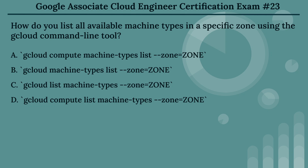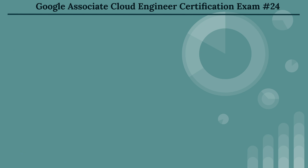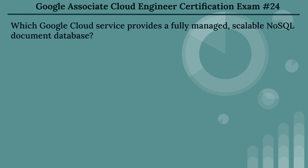The right answer is Option A: gcloud compute machine-types list --zone=ZONE. The command gcloud compute machine-types list --zone=ZONE lists all available machine types in the specified zone. This helps you choose the appropriate machine type for your Compute Engine instances.